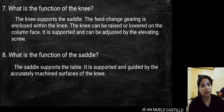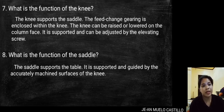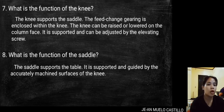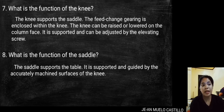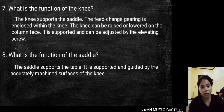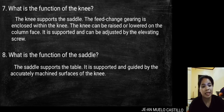What is the function of the knee? The knee supports the saddle. The feed change gearing is enclosed within the knee. The knee can be raised or lowered on the column face, and is supported and adjusted by the elevating screw. The saddle supports the table and is guided by the accurately machined surfaces of the knee.